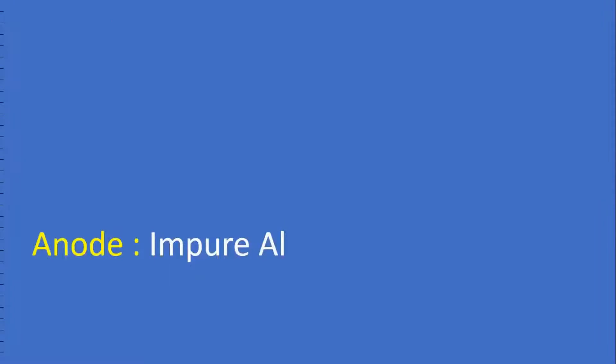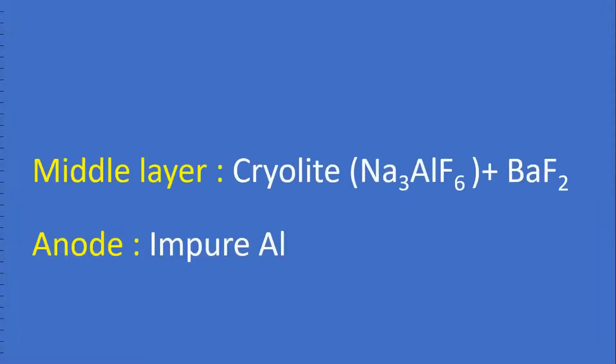Anode is impure aluminum metal. Middle layer is cryolite, Na3AlF6, and BaF2 is added. That mixture is the middle layer. Cathode is pure aluminum in this process.